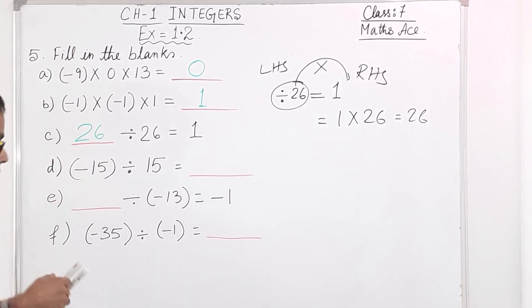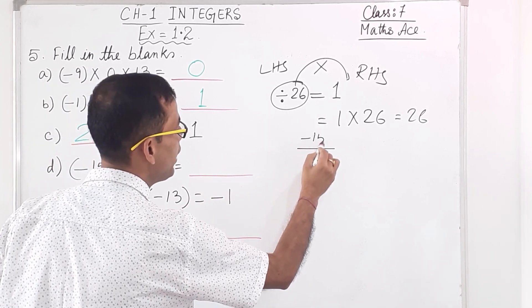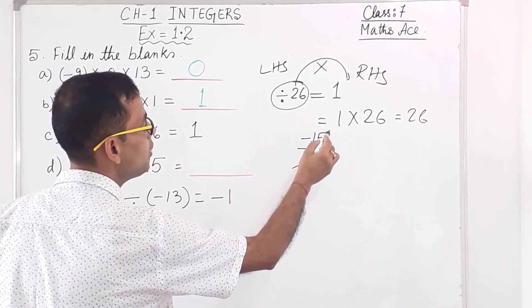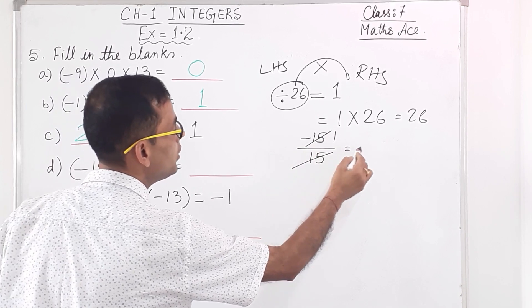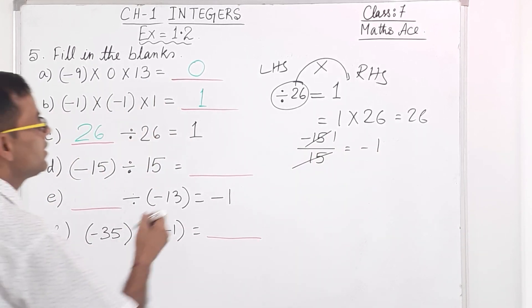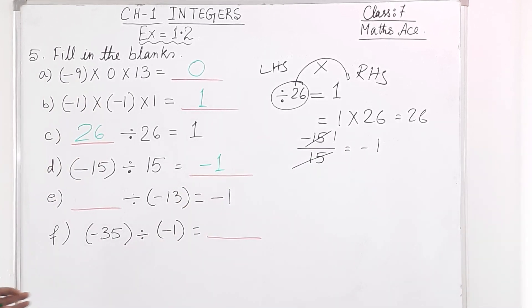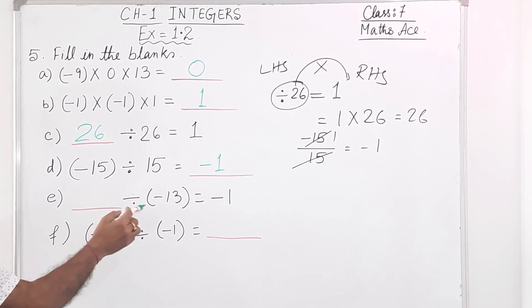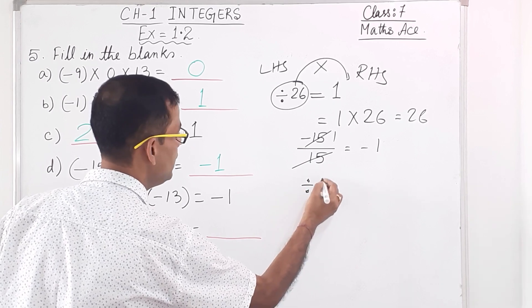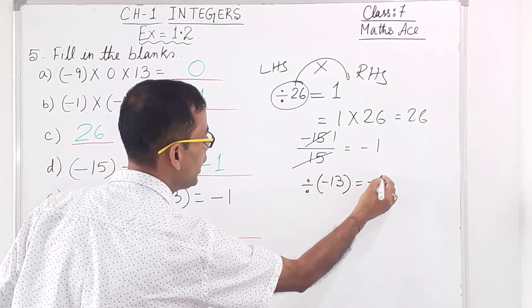Next: minus 15 divided by 15. In the numerator minus 15, denominator 15. 15 ones are 15, so you get minus 1. The answer is minus 1.